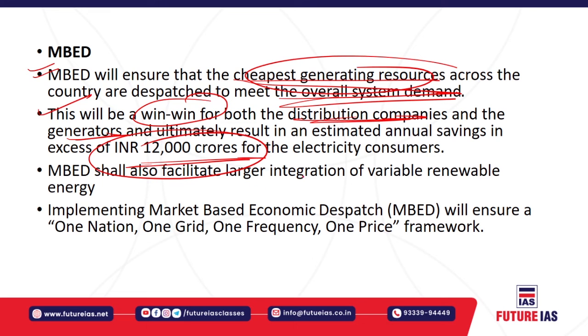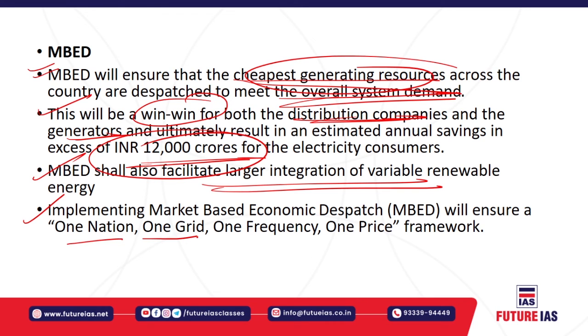The model would result in annual savings of around ₹12,000 crores. It will also facilitate larger integration of variable renewable energy. It is based on the 'one nation, one grid, one frequency, and one price' framework adopted by the Government of India.